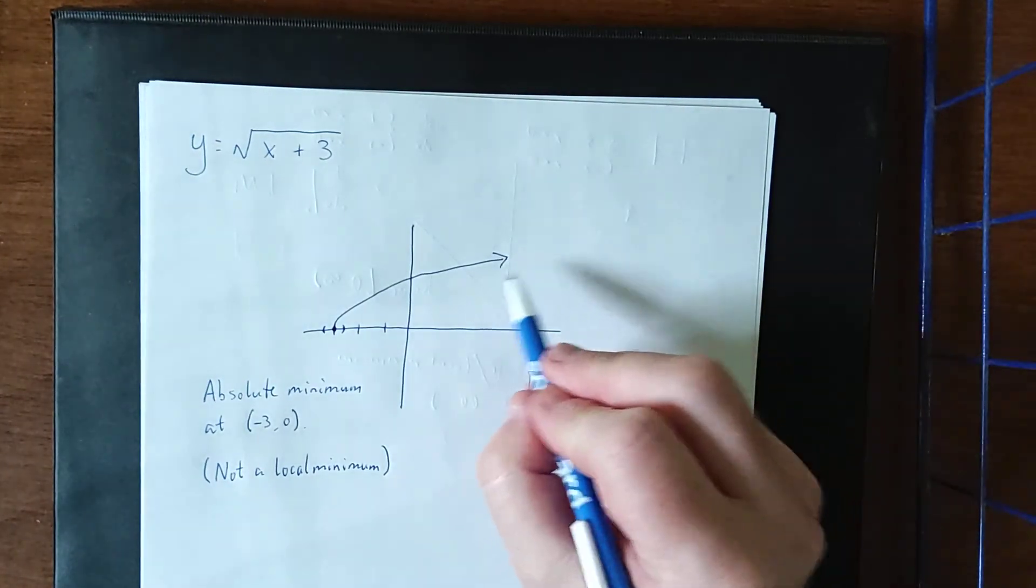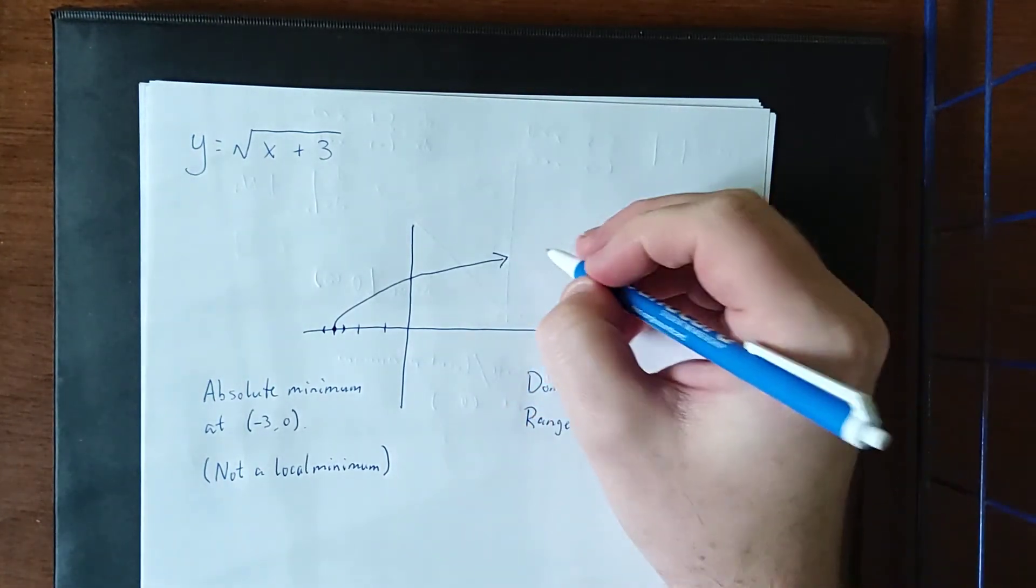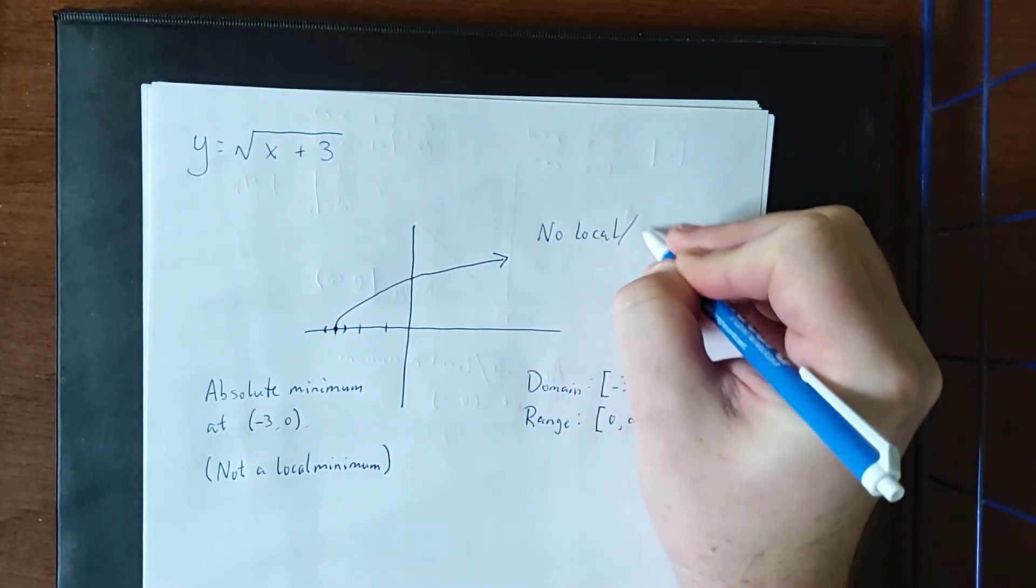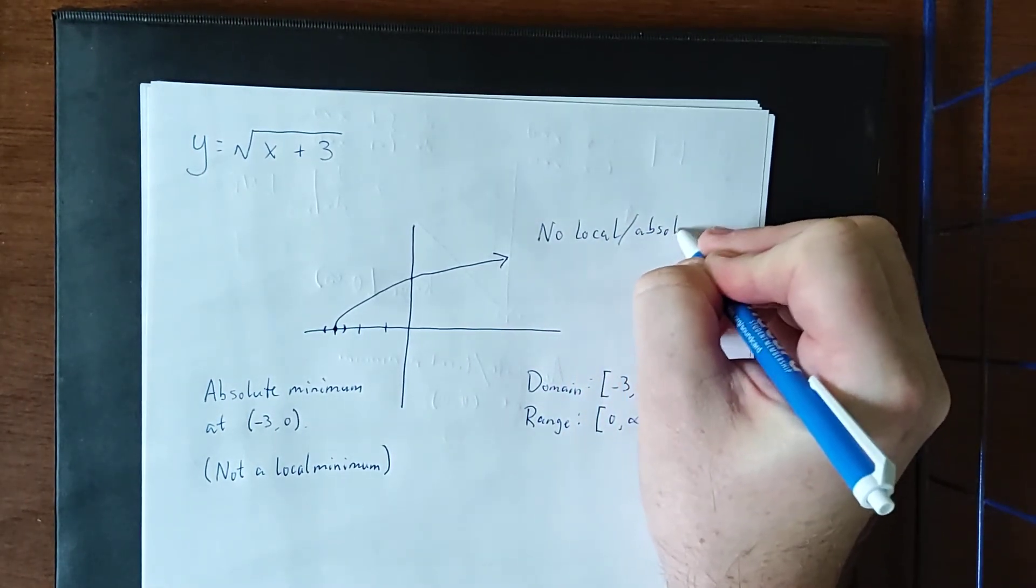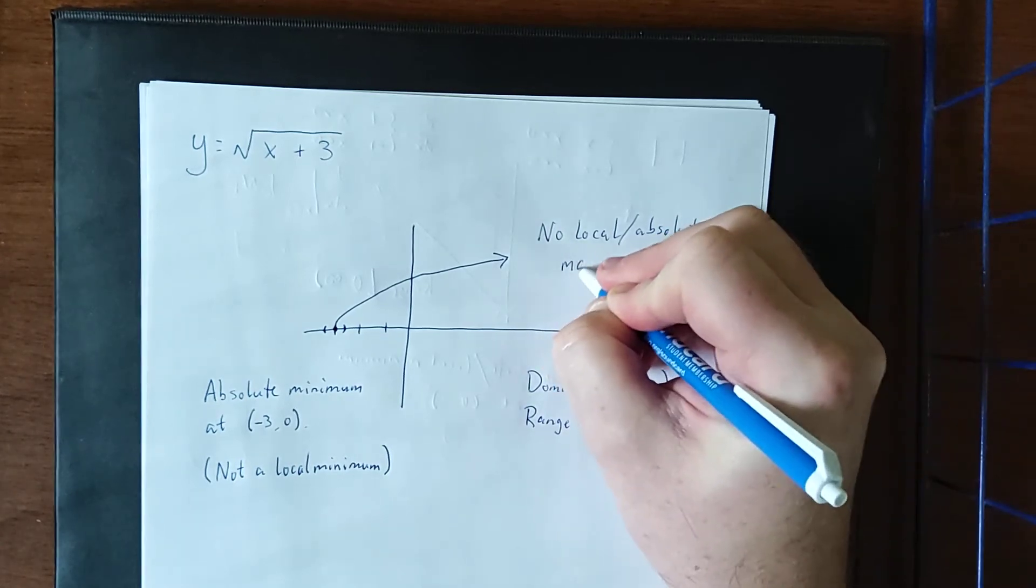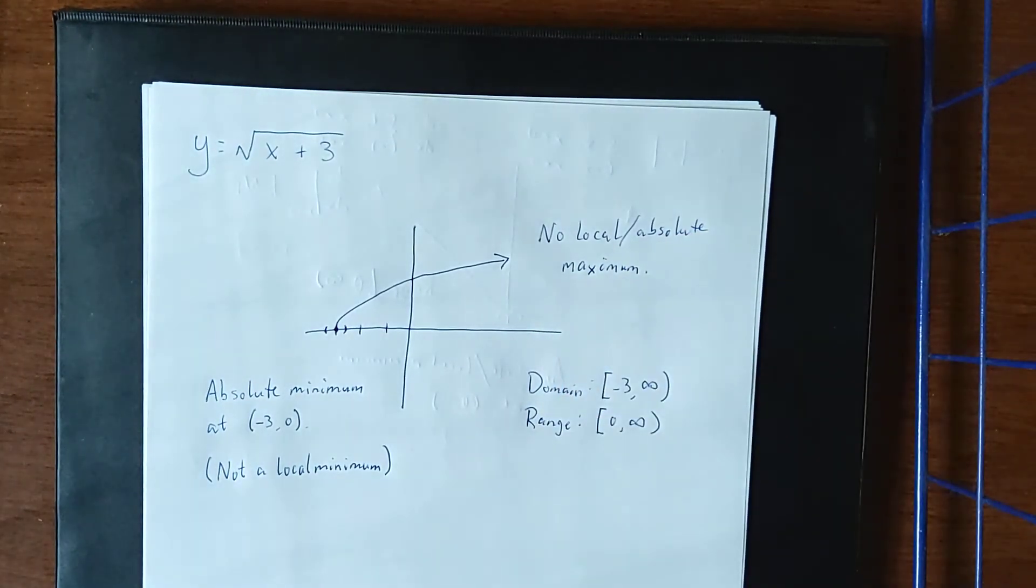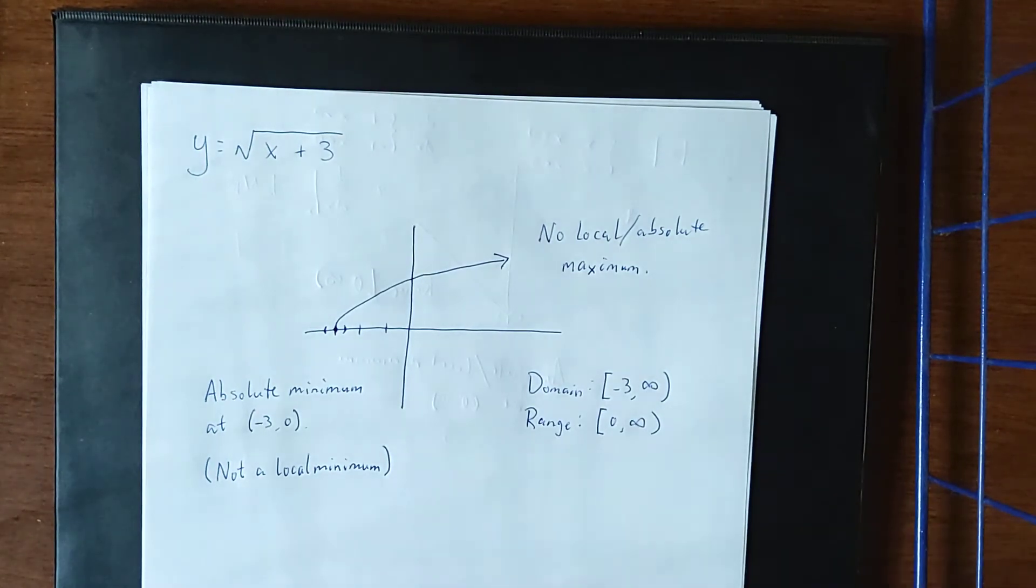Now, because the arrow indicates that it's just going to continue going on in the upward direction, there is going to be no local nor absolute maximum. For every point that's on the graph, we will always be able to find a point with a larger y value.